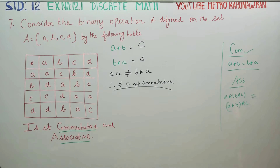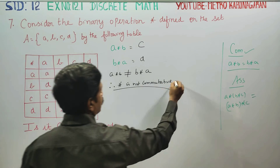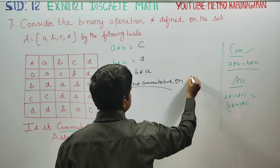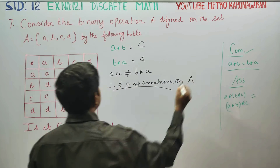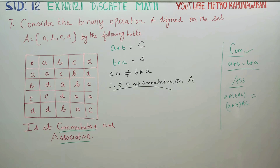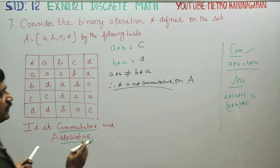The commutative property is satisfied on the set A. Commutative on set A is confirmed. Now for the associative property, we will try to verify it.